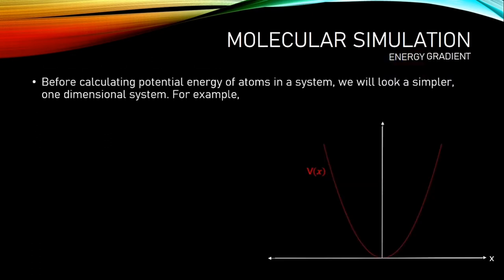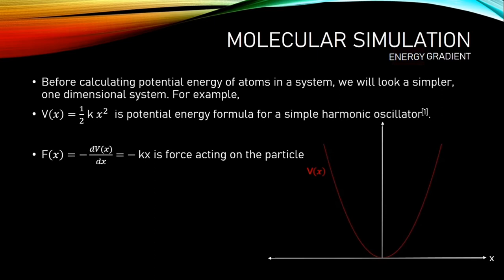Before getting into force field, I mean as a topic, I will give a simpler example of calculating potential energy and force acting on particle. Here, V(x) is potential energy of a simple harmonic oscillator. x is position of particle and k is stiffness of the function. The F(x) is the force acting on particle. Force is directly related with the gradient of the function. So, we are taking first derivative of the function. But we are taking negative derivative, because force will act on particle towards the origin.